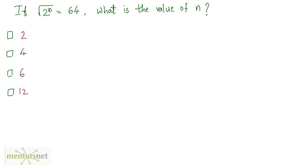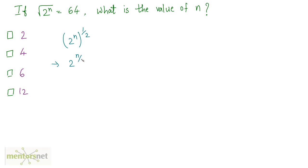Now let us solve the second question: if the square root of 2 raised to n is 64, what is the value of n? We can write the square root of 2^n as 2 raised to n raised to the power 1 by 2, which gives us 2 raised to the power n by 2.